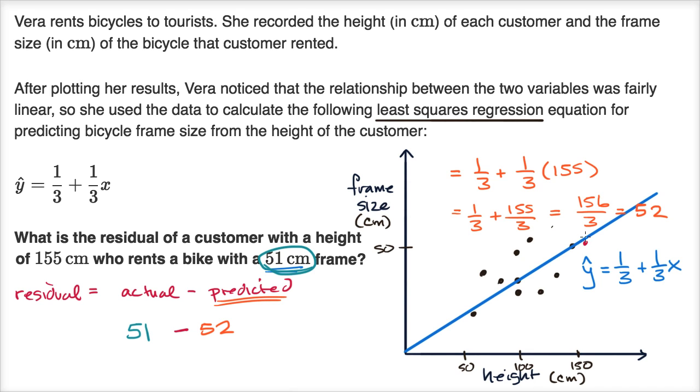And that distance, and we can see that they are below the line, so that distance is going to be, or in this case the residual is going to be negative.